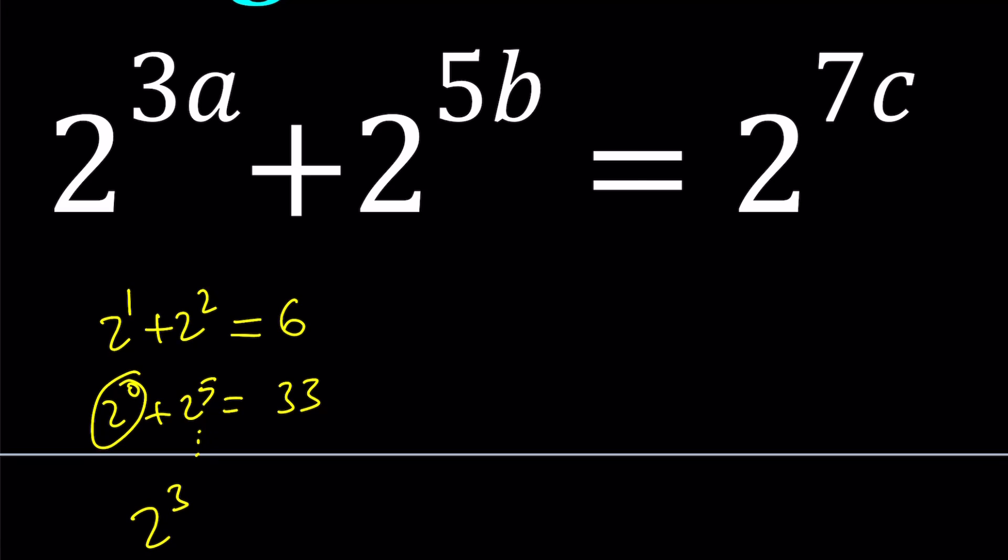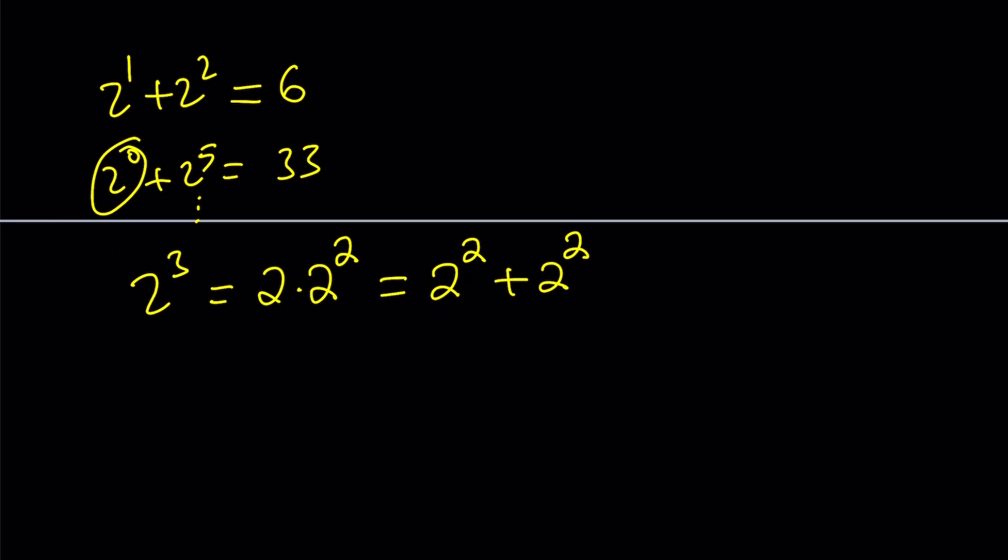Powers of 2 can be expressed as themselves. For example, 2 to the power of 3 is just 2 to the power of 3. But, it can also be written as 2 times 2 to the second power. And, that can be broken down into 2 to the second plus 2 to the second. Which means, if you're going to break down a power of 2 into 2 powers of 2, then those powers that make up the power of 2 have to be equal.